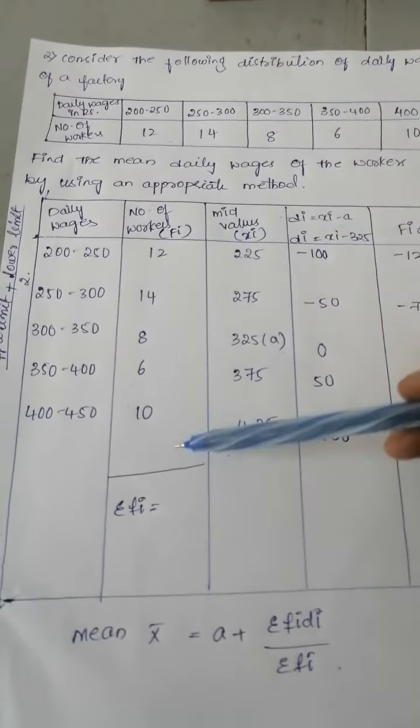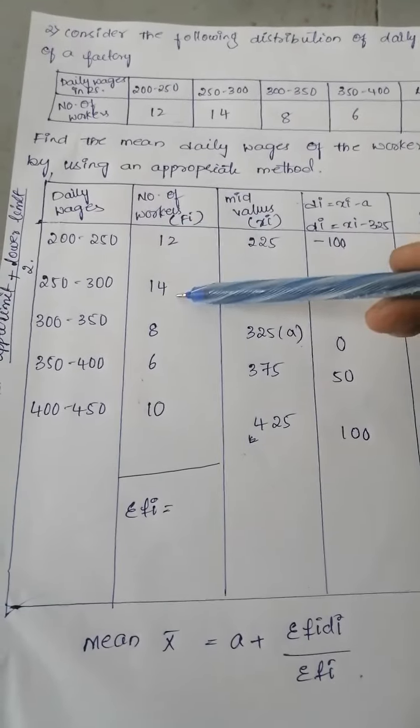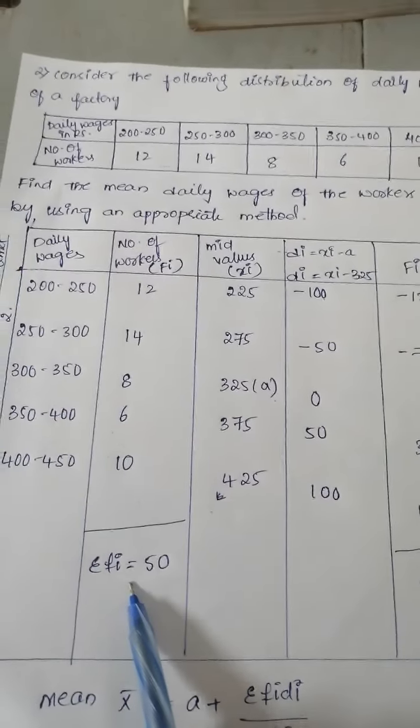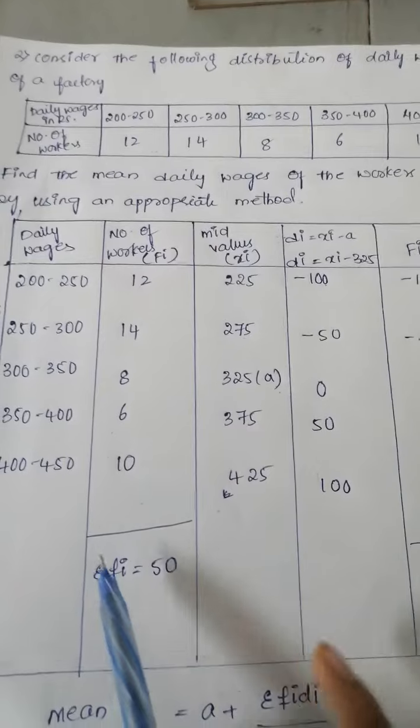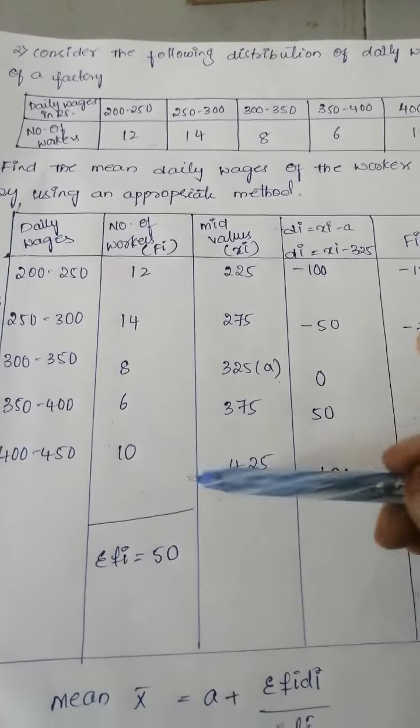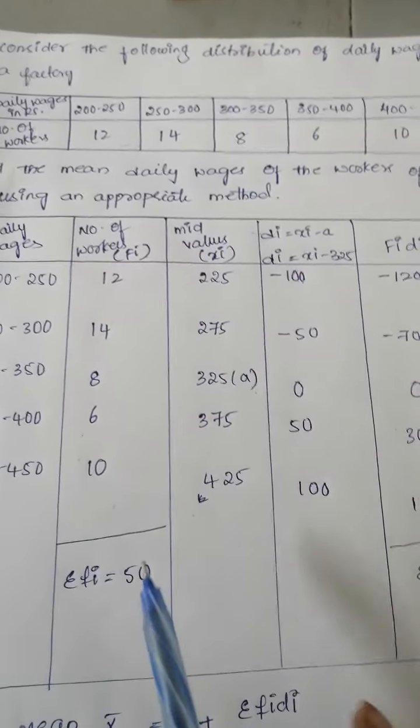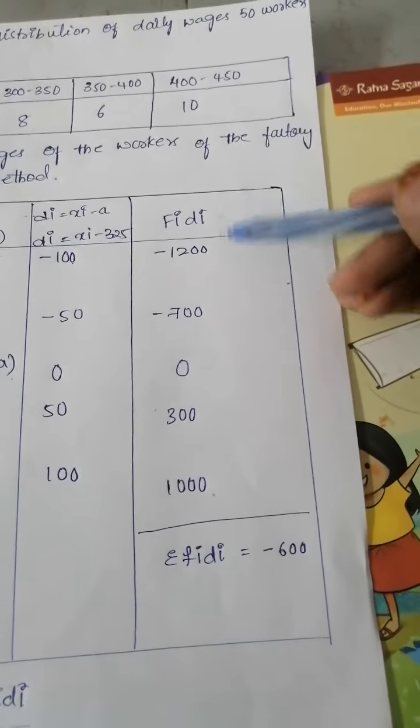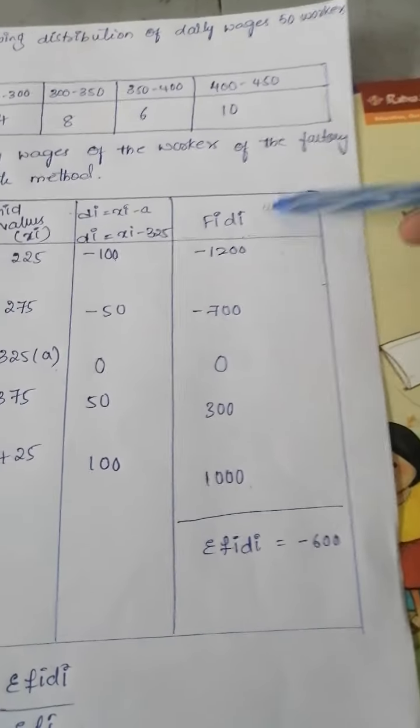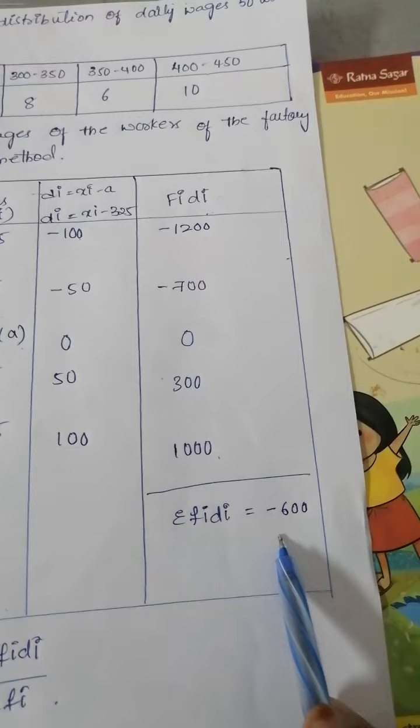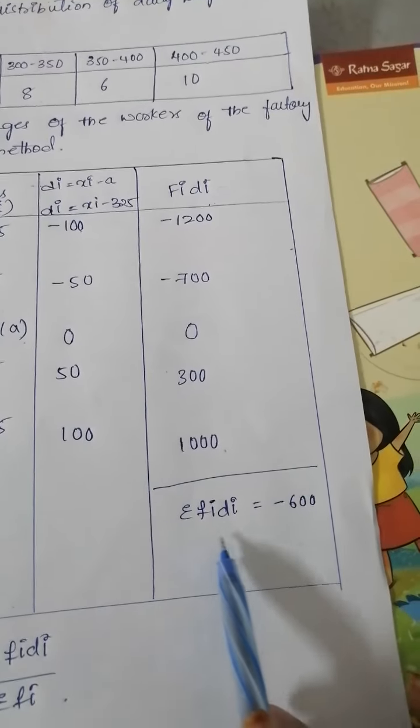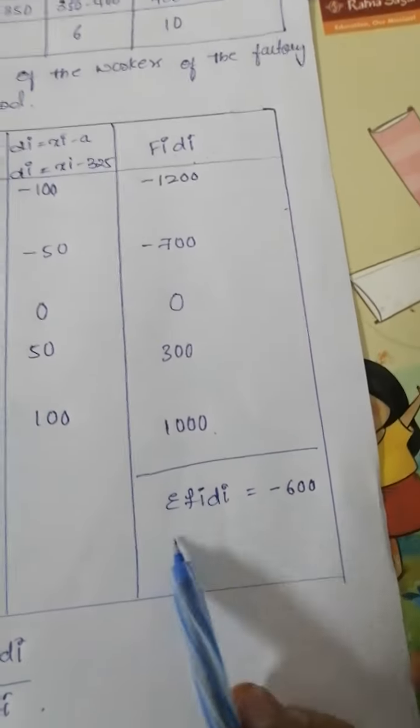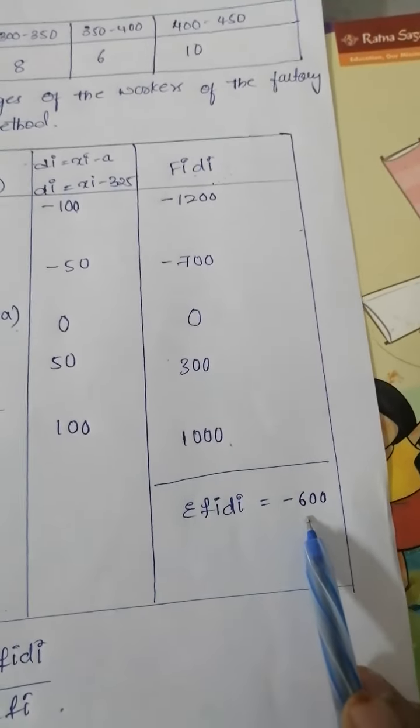First of all, add all frequencies. 12 plus 14 plus 8 plus 6 plus 10, how much? 50. Summation of Fi means total number of frequencies. Next, total number of Fi di. Add this all. Summation of Fi di equal to minus 600. Summation of Fi di means total number of Fi into di.